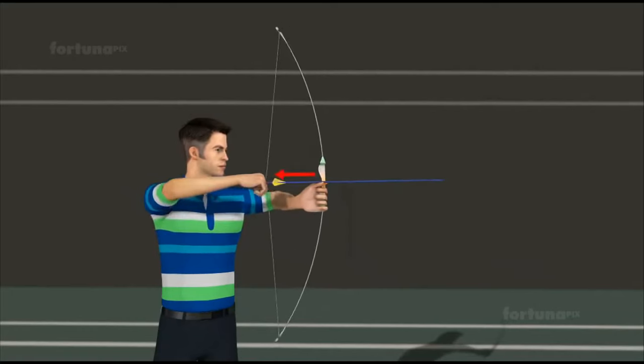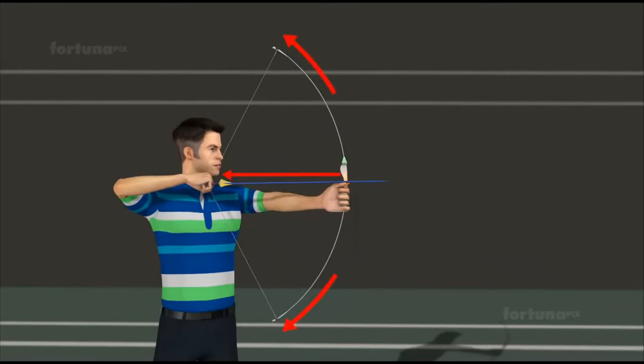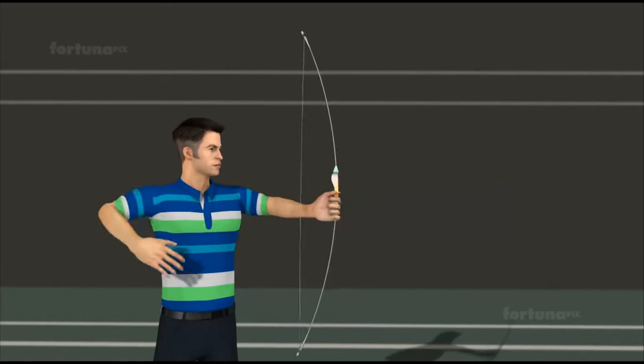The further back the string is pulled, the more the bow will bend, allowing the arrow to travel even further once the string is released.